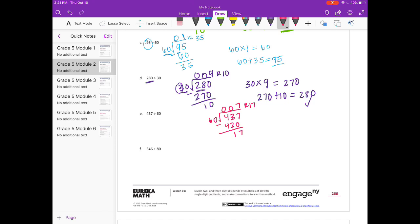So 7 remainder 17. And to check, we would do 60 times 7 equals 420. 420 plus 17 equals 437. 437. So that works.